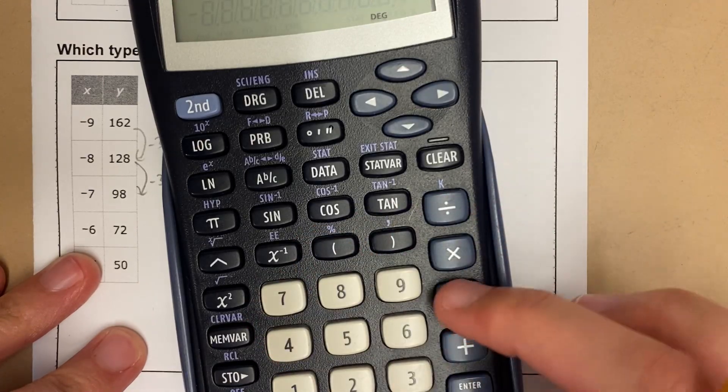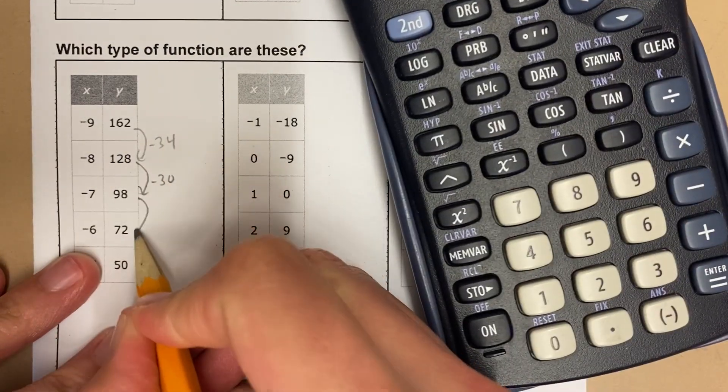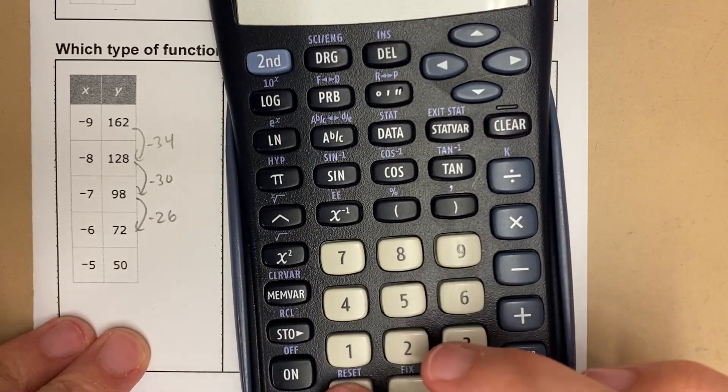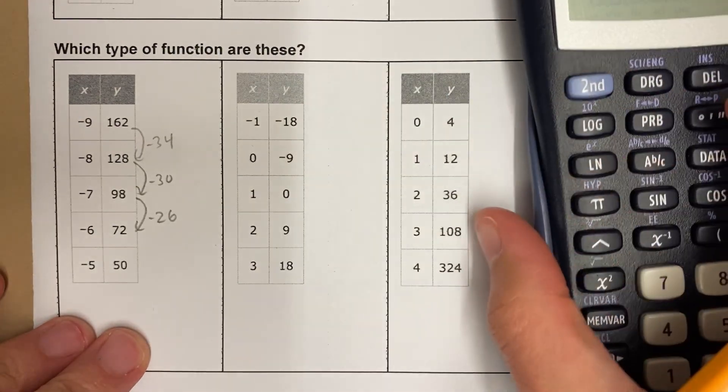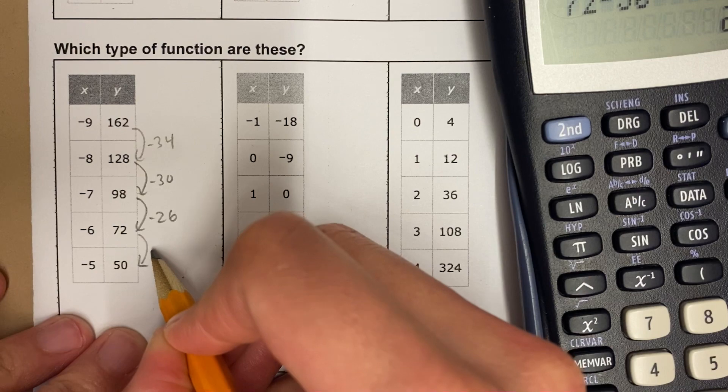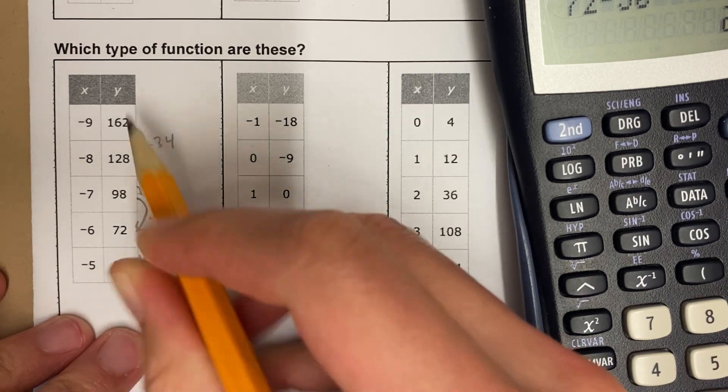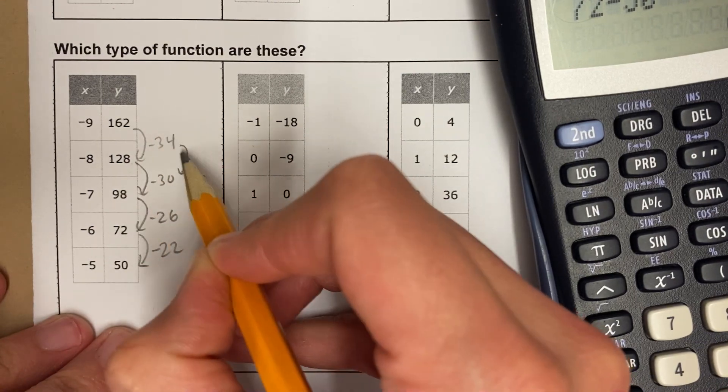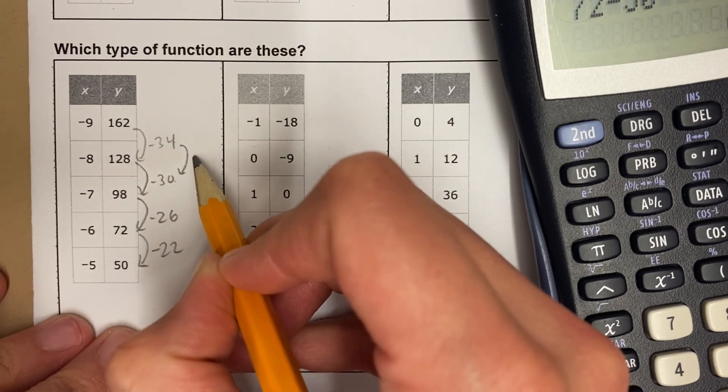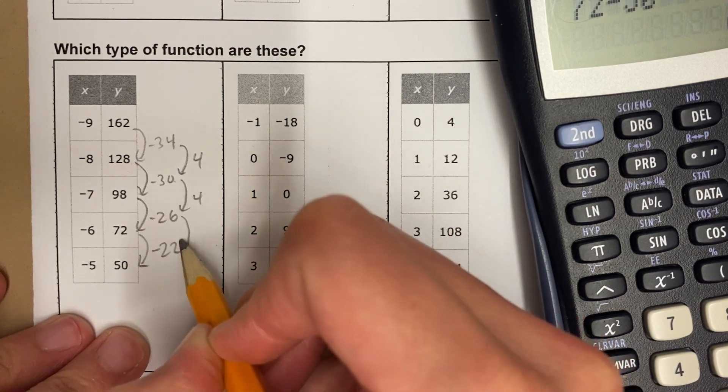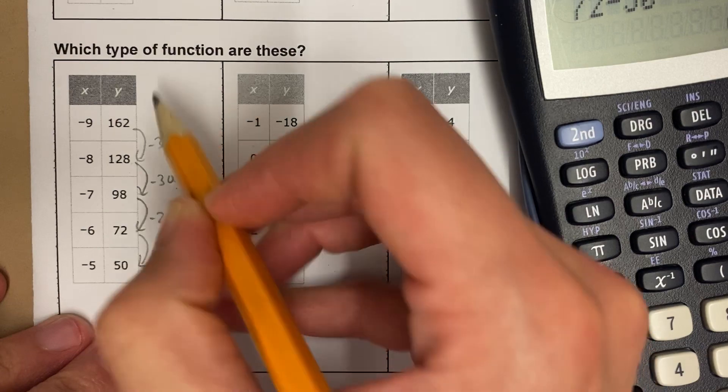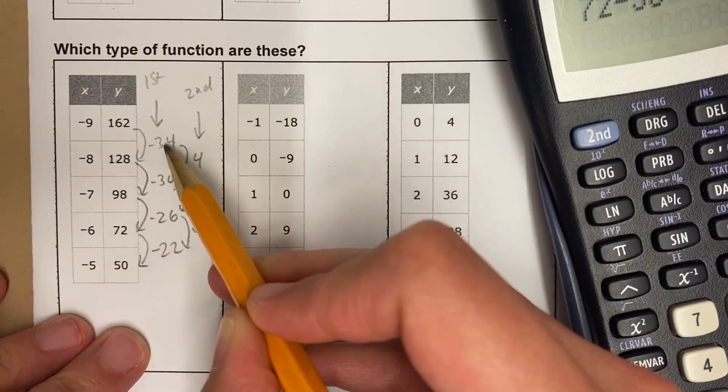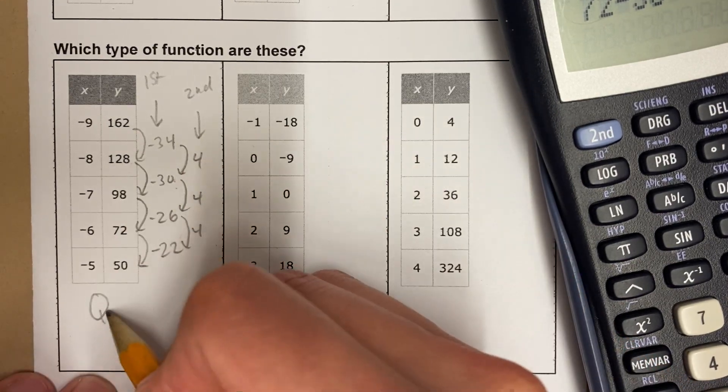Let's keep going. So I have 72 minus 98, this is minus 26. So hopefully what you're seeing is there's a little bit of a pattern here. 50 minus 72 would have been negative 22. This is minus 34, minus 30, minus 26, minus 22. These numbers are changing by four. This is the first difference. This is the second difference. Because the second difference is the same, we know that's quadratic.